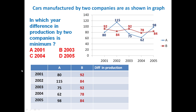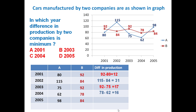To solve this, let's prepare a small table. Cars manufactured by company A: 80, 115, 75, 62, and 98. Cars manufactured by company B: 92, 84, 92, 78, and 84. The difference in production each year: 92 minus 80 is 12; 115 minus 84 is 31; 92 minus 75 is 17; then 16.